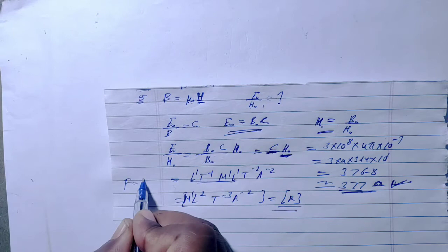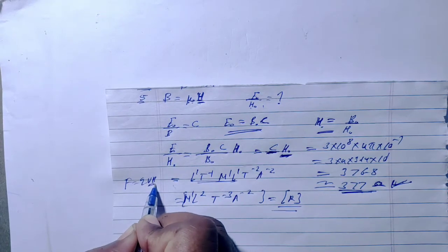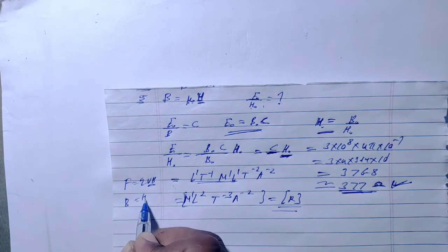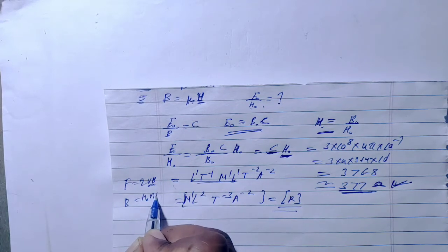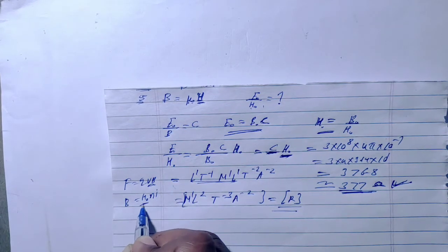To find the dimension of mu-naught, use the formula F equals qvB, and B equals mu-naught times I times n, so from here we can determine the dimension of mu-naught.